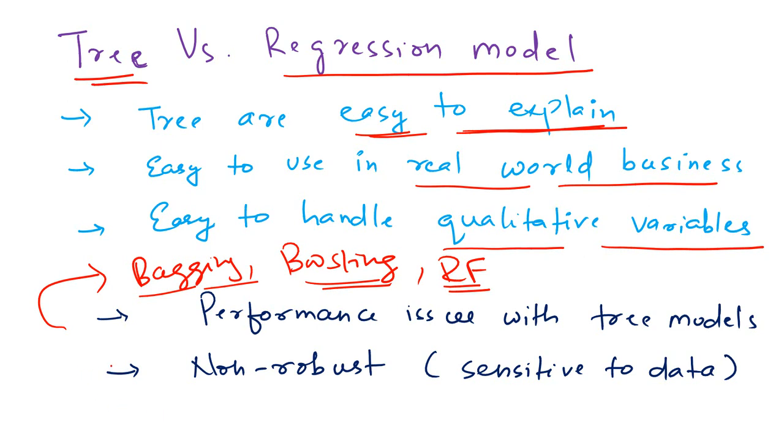And the second demerit is it's non-robust. If you change the data, it's very sensitive. Performance is likely to change quite a lot. So it's not very robust in that sense. You never know if there is some change in future, some change in your data in future, it's likely to give completely different results. So that's another issue with tree based models.